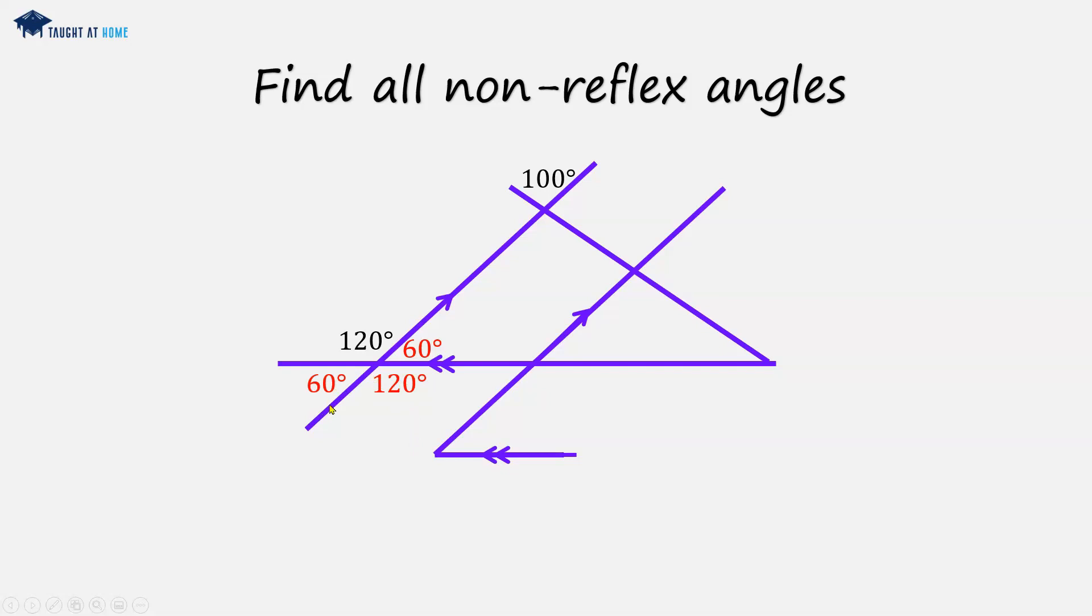And now what you can see is we've got two parallel lines here, and we've got a straight line that joins them. So we have alternate and corresponding angles. So all of these will be the same as all of these four angles here.